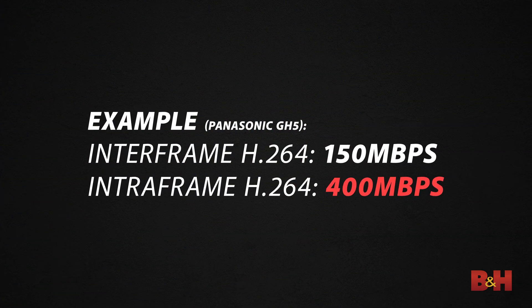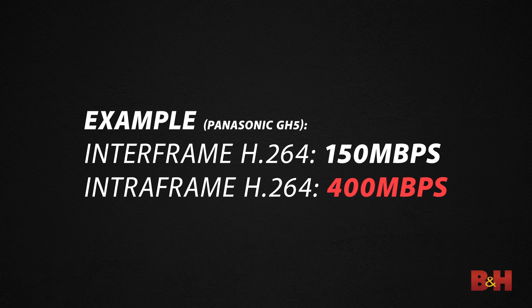Intraframe codecs are often regarded as having higher quality images, and while this can be true, it's a bit more complicated than that. Because intraframe codecs encode whole frames, they require a lot more bits to encode the whole video — this is why intraframe formats are so huge. Intraframe codecs save space and instead reconstruct frames from others. But if they have similar bitrates, an intraframe codec could potentially look better, since it has the extra flexibility to encode the image. This is especially true the lower the bitrate is.